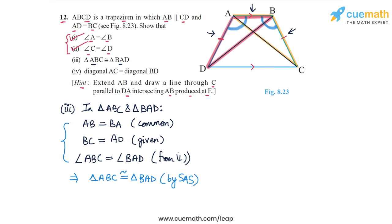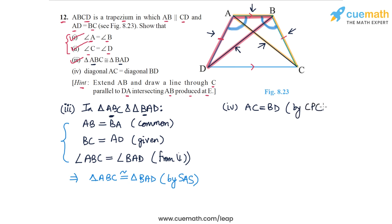Triangle ABC is congruent to triangle BAD — that proves part three. In part four, we have to prove that AC and BD are equal. These are simply the corresponding sides of the two triangles proven congruent, so we can write AC equals BD by CPCT — corresponding parts of congruent triangles ABC and BAD. That proves part four, and we have completed all four parts of question number 12.